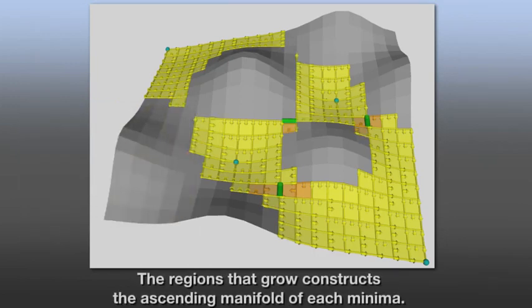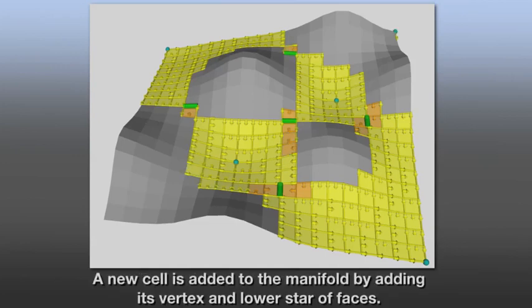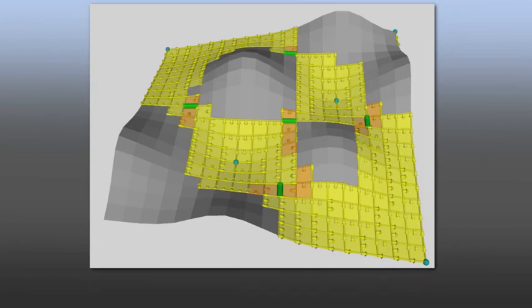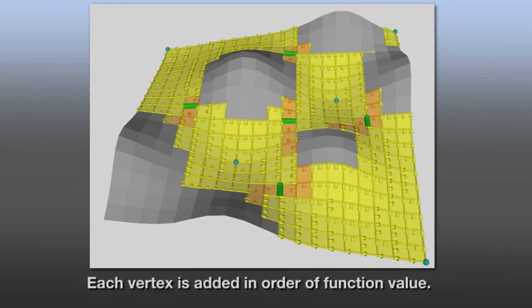The regions that grow construct the ascending manifold of each minima. A new cell is added to the manifold by adding its vertex and lower star of faces. Each vertex is added in order of function value.